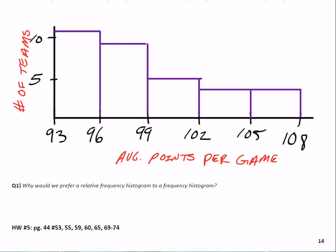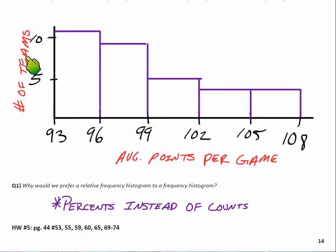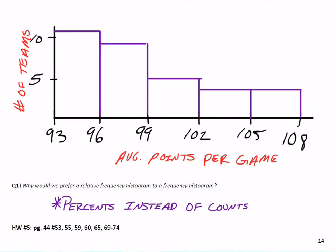Why would we prefer a relative frequency histogram to a frequency histogram? Relative frequency has to do with percents instead of counts. Any time you want to see percentages of the whole instead of raw counts — for example, what percent of teams fall in each bin — that's when you'd use a relative frequency histogram.